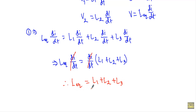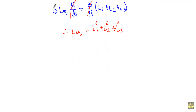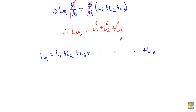The equivalent inductance of series-connected inductors is the sum of the individual inductors. If we have a total of N inductors connected in series, the equivalent inductance L equivalent equals L1 plus L2 plus L3 up to LN. So when we see inductors in series, we simply add the individual values to get the equivalent inductance, which means we can replace all those inductors with a single inductor.